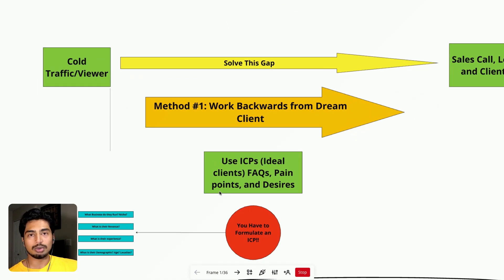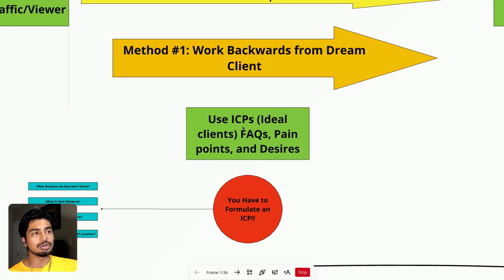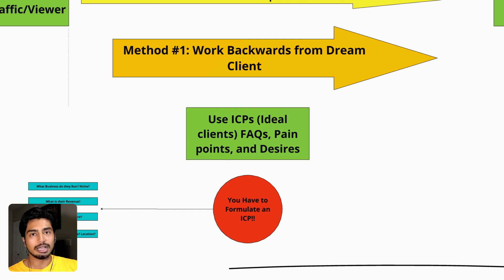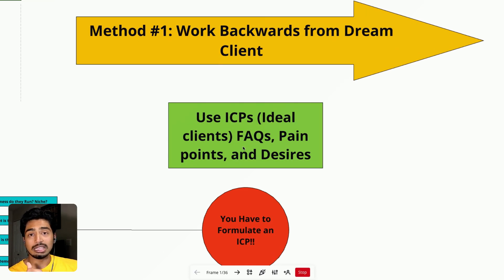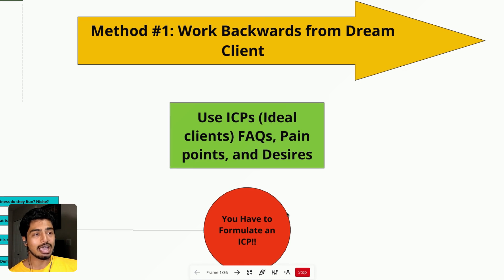Method number one is working backwards from a dream client, and you're going to use your ICP. An ICP is an ideal client profile — search it up on Google, it's basically a dream client. You need to understand who your dream client is to really make sure this content idea works. If you don't understand your dream clients, how could you expect to create content that attracts them? You have to understand your ICP — the questions they have, the pain points they have, and the desires they have.